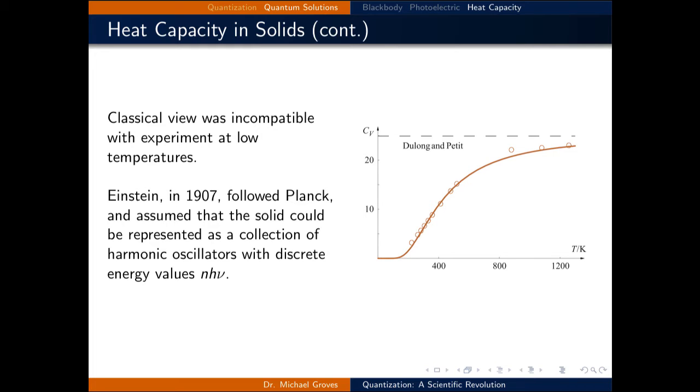In order to solve this problem, Einstein in 1907 followed Planck's idea of quantization again. He assumed that the solid could be represented as a collection of harmonic oscillators with discrete energy values equal to n times Planck's constant times their frequency.